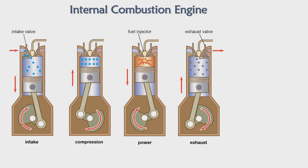After expansion, the exhaust valve opens, the piston comes up again, and all the exhaust gases go outside. These are the four strokes: first, the intake stroke where air and fuel mixture are drawn in; second, the compression stroke where the intake valve closes and the mixture is compressed to raise the temperature; third, the power stroke where a spark ignites the fuel and combustion occurs.